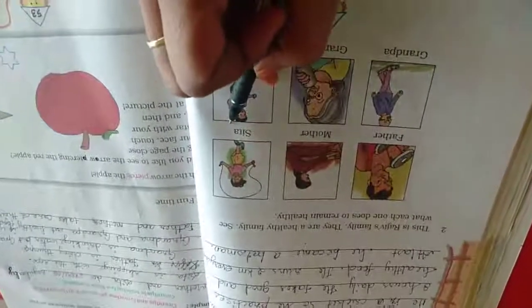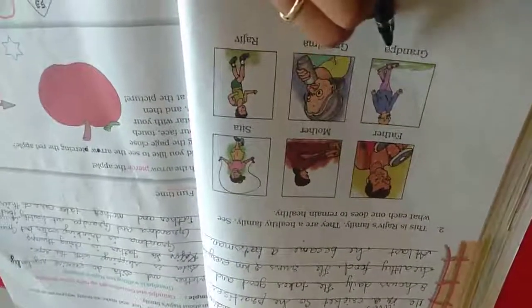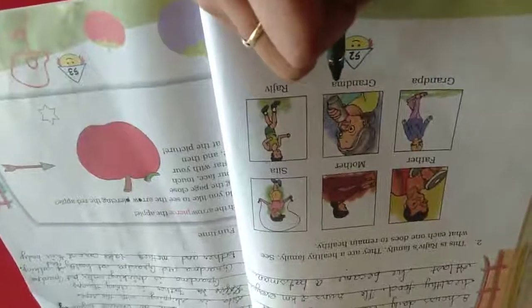See this, this is Raji's family. They are being a healthy family. See what they are doing. Father is doing thumbs, mother is doing exercise, Raji is skipping, grandpa is working, grandma is drinking water or milk. Rajiv is jogging. Everyone is doing some exercise.